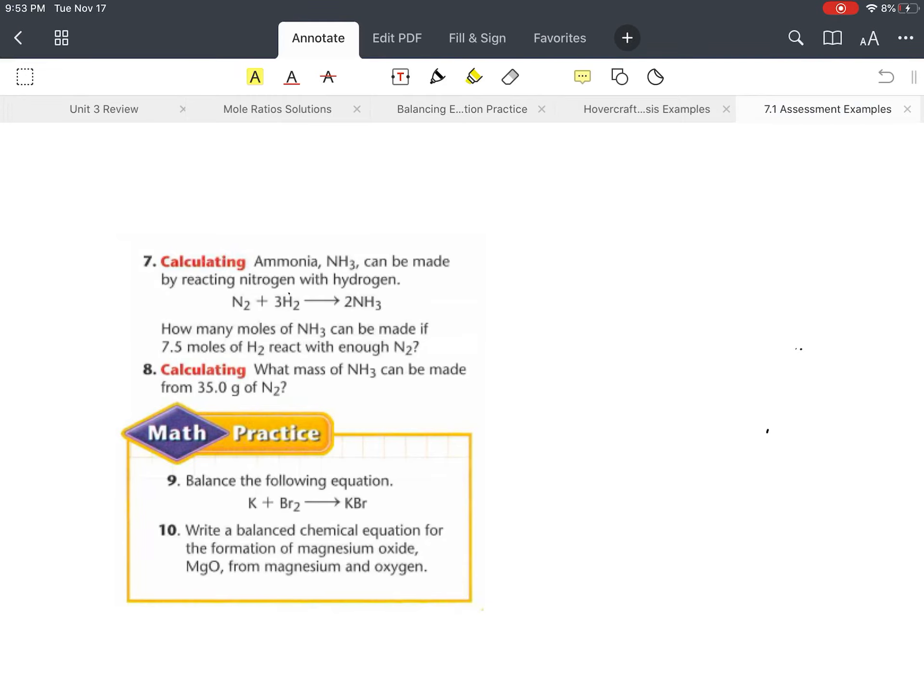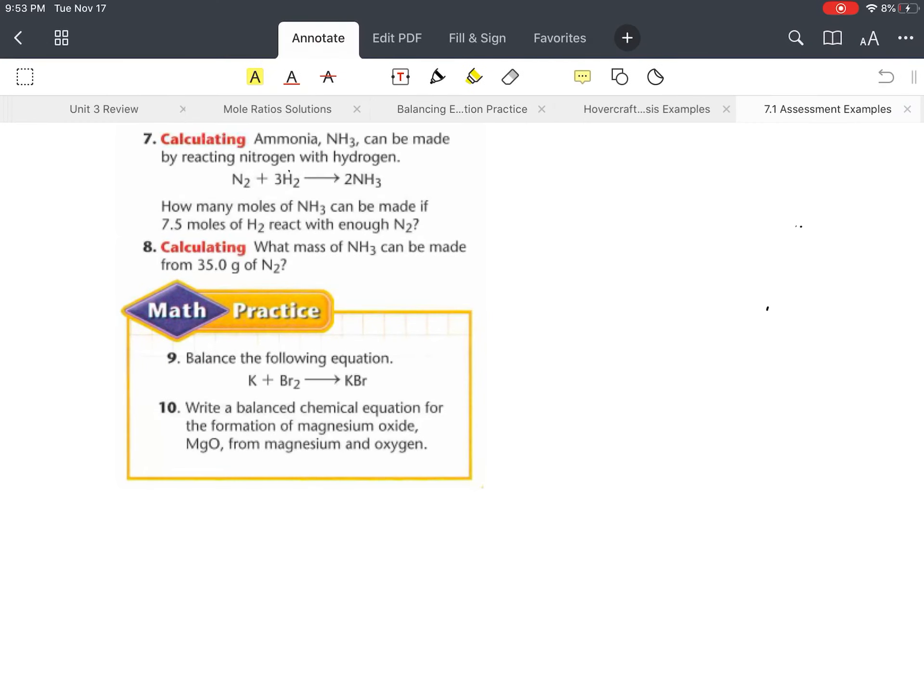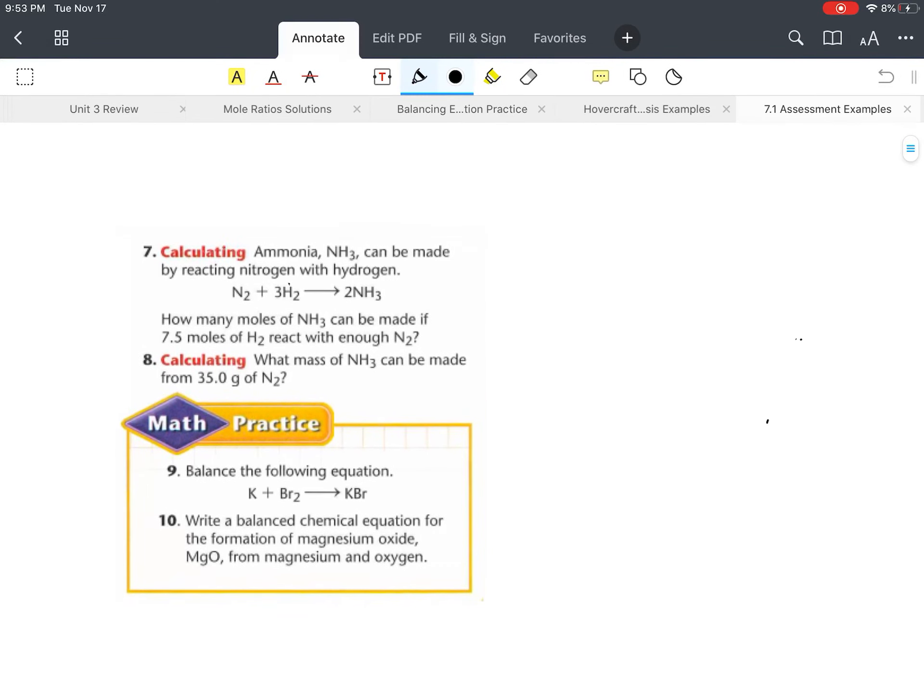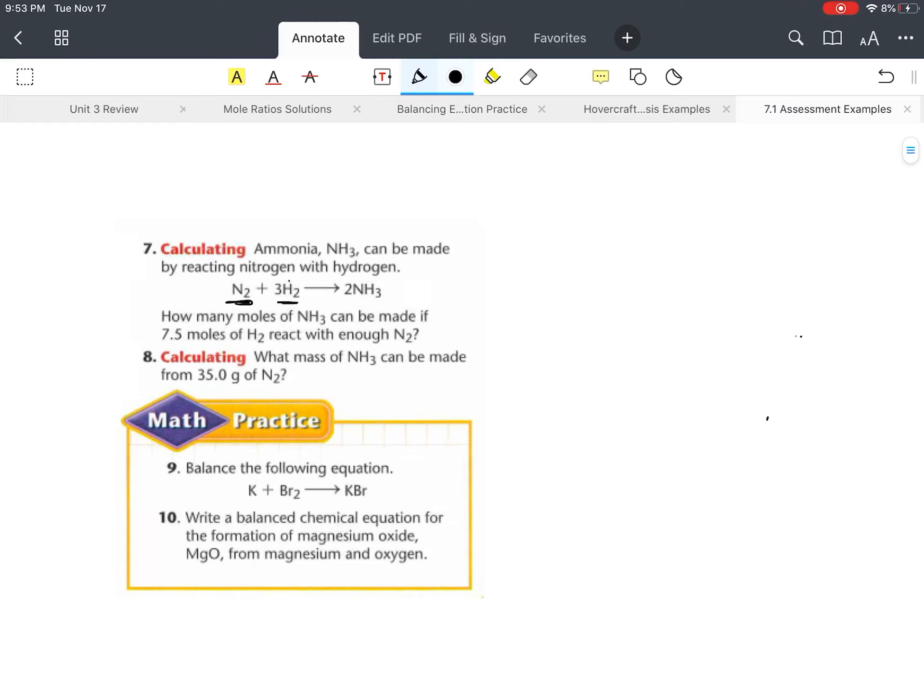So we have our N2 plus 3 H2s and they react to make 2 NH3s. And what that is telling me is I only need 1 N2 to react with 3 H2s and when I do that I get 2 NH3s. Now I'm writing the 1 there just to show you but obviously when there is no number it is implied that it is 1. So the question is how many moles of NH3 can be made if 7.5 moles of H2 react with enough N2?